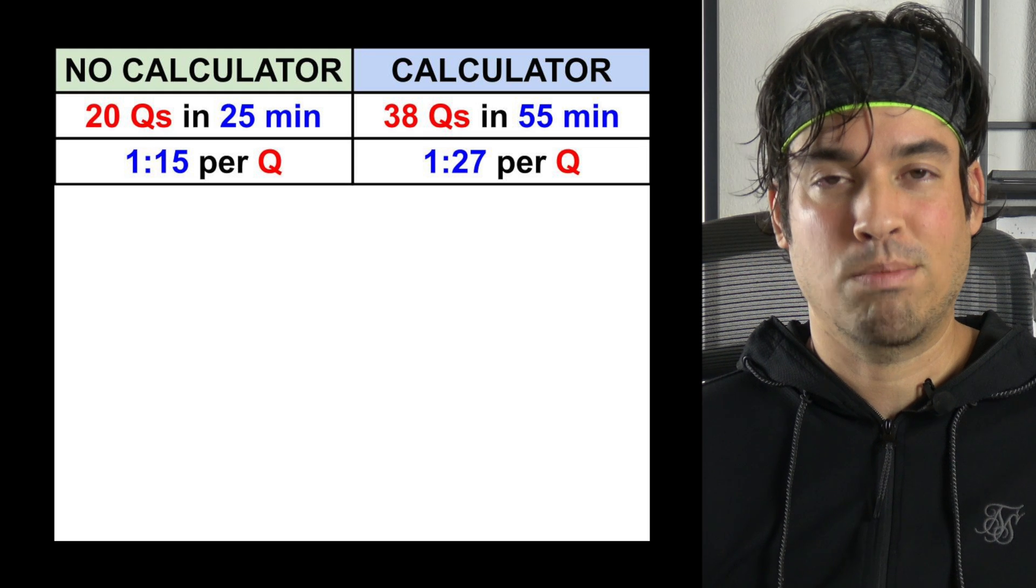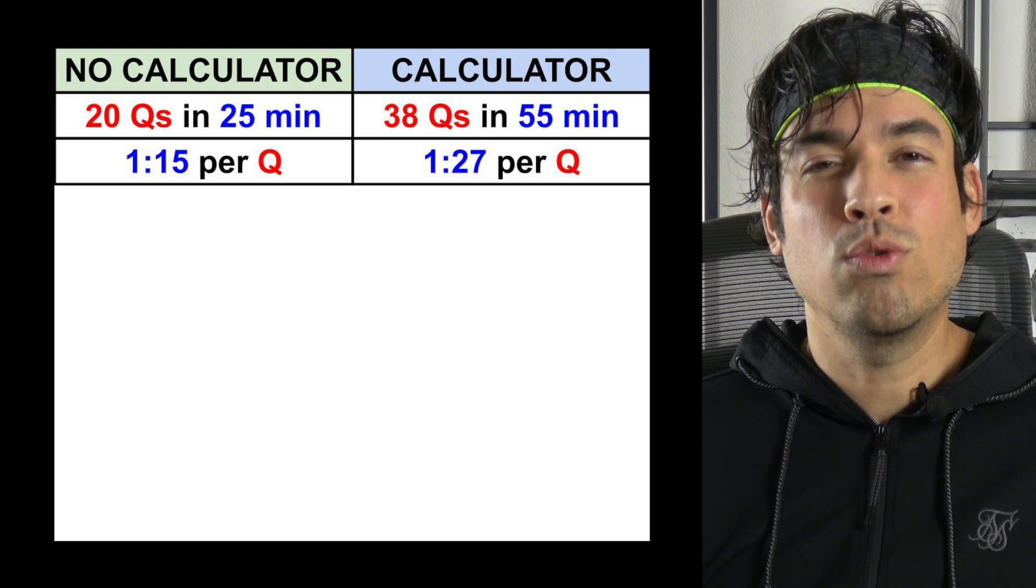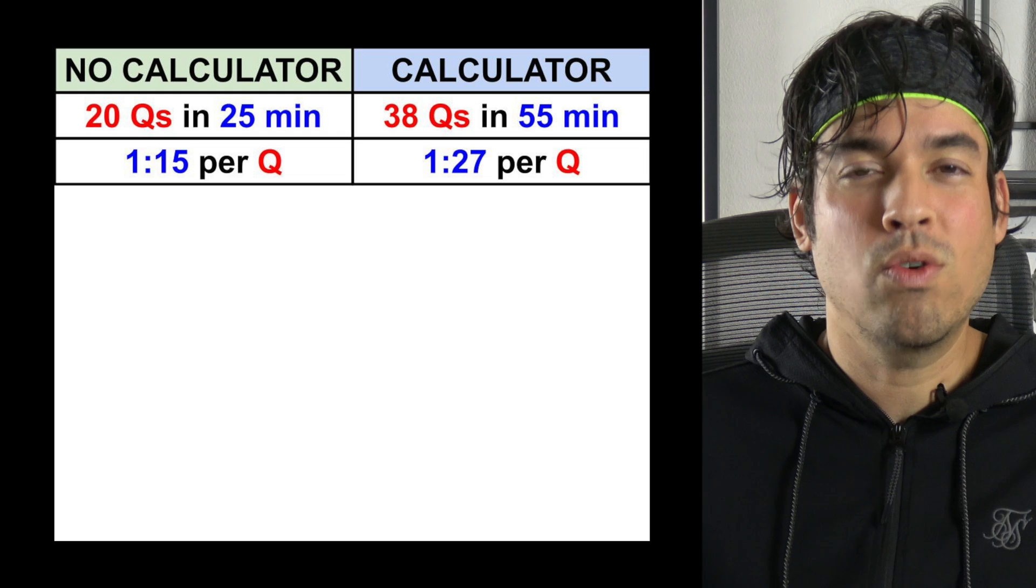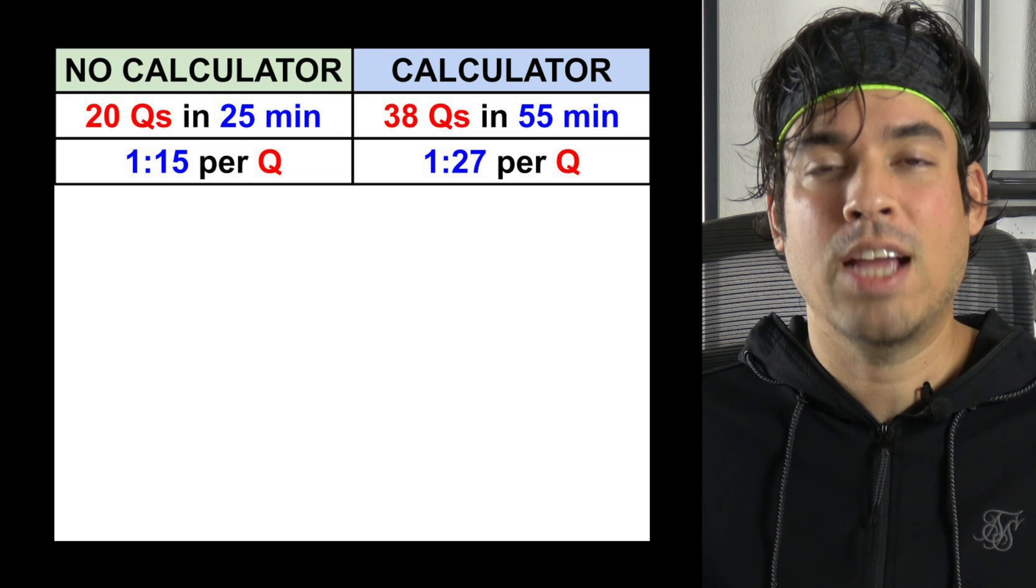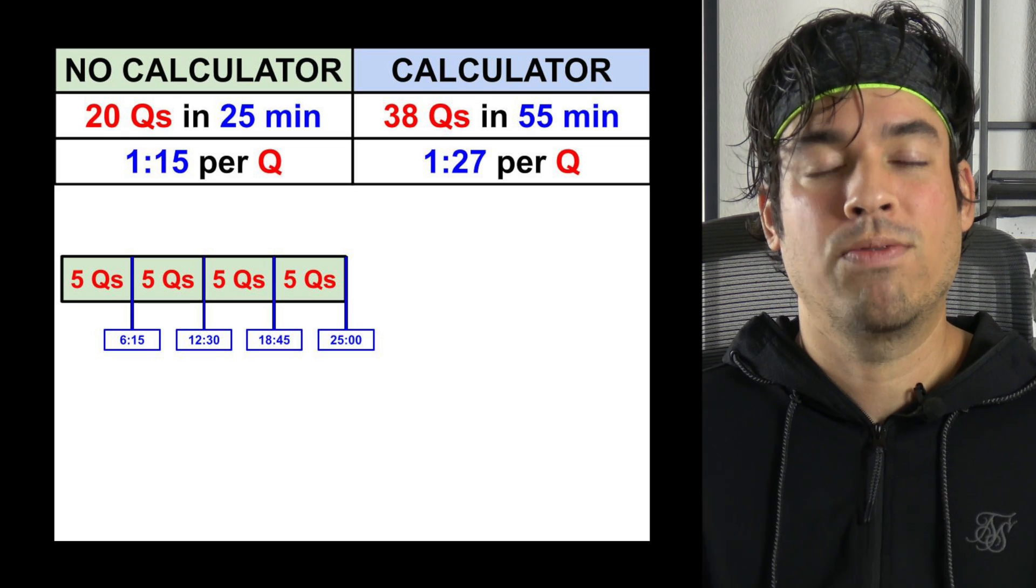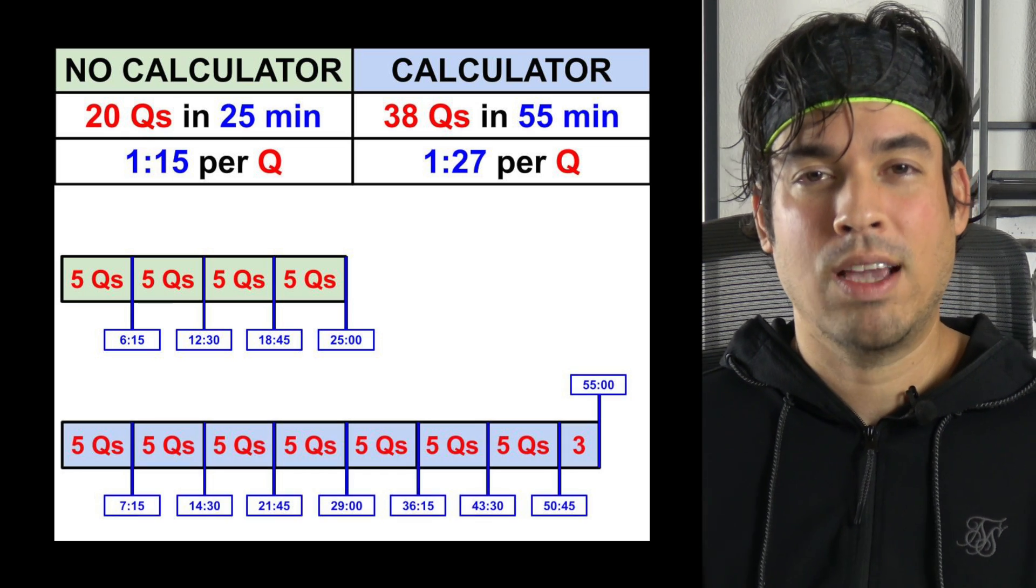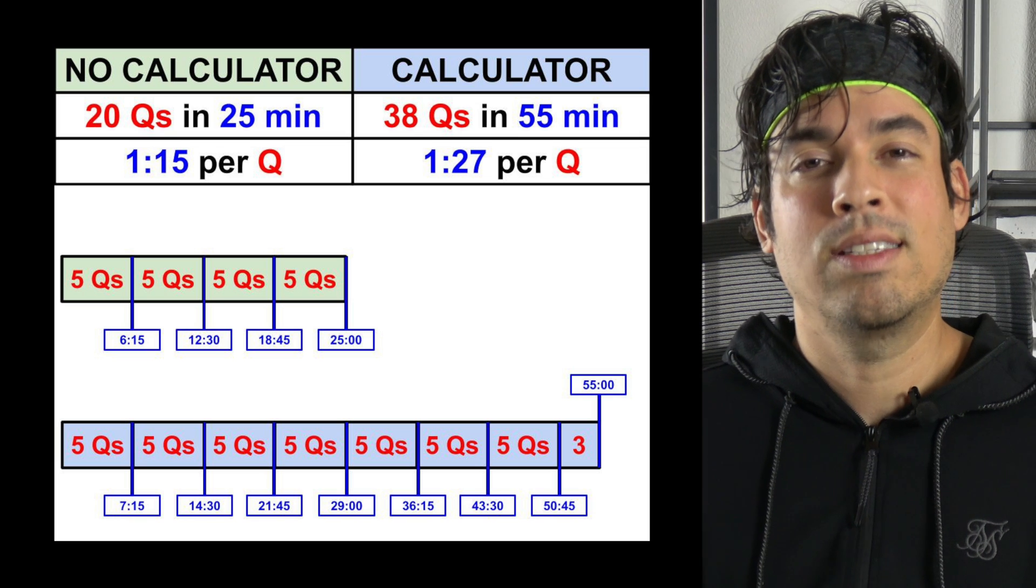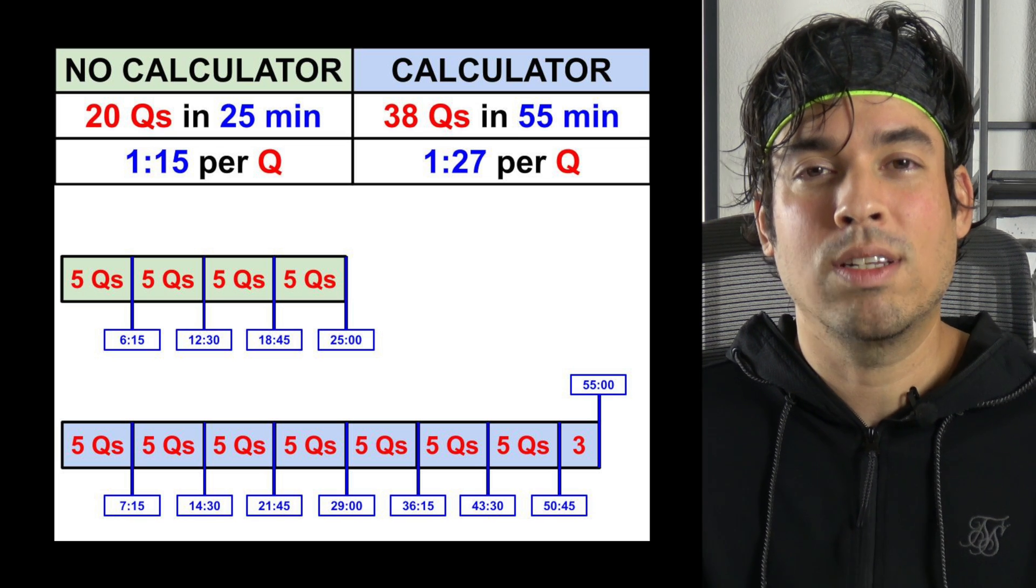Now if we were to do a strict breakdown of the no calculator section in a linear fashion, this is how you could allot your time, essentially in these chunks per five questions. The same can be said for the calculator section. So again if you look at these time stamps, this is literally broken down with the equal amount of time per question.